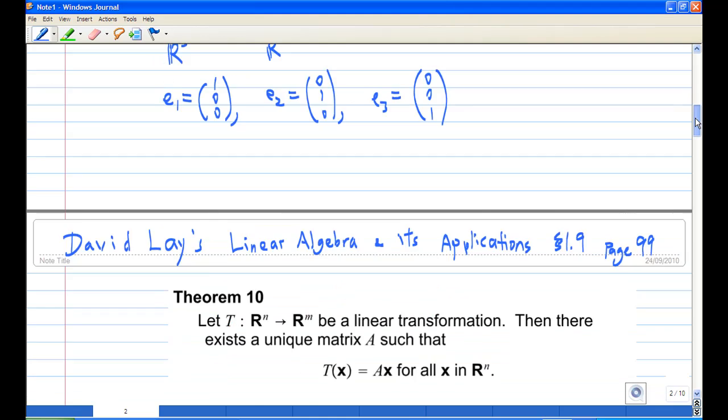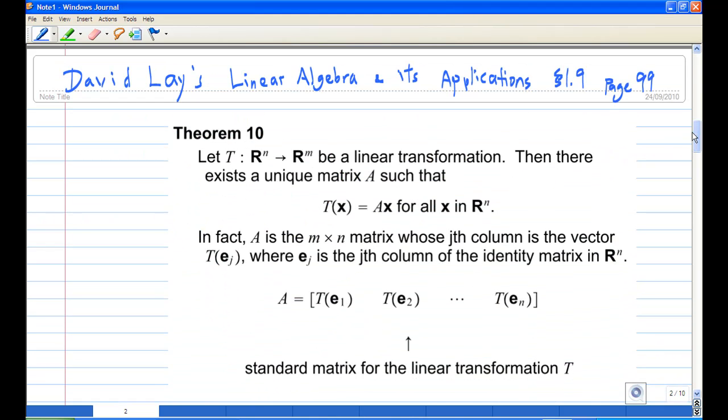Now let's refer to David Lay's Linear Algebra and Its Applications, Section 1.9, page 99, Theorem 10. It says that if you have a linear transformation, then there is a unique matrix A such that T(x) = Ax for all x in Rⁿ. In fact, A is the n by n matrix whose jth column is the vector T(eⱼ), that is the image of eⱼ.